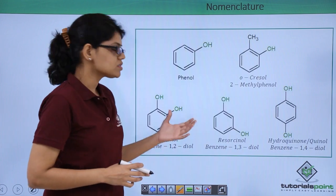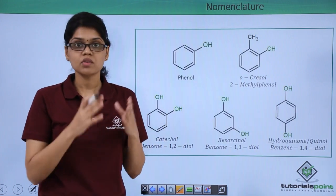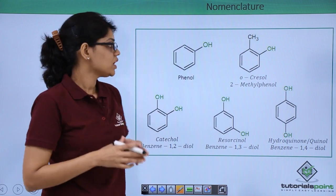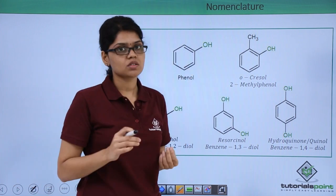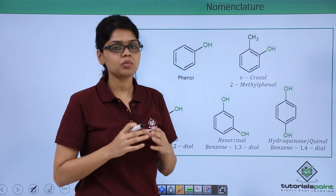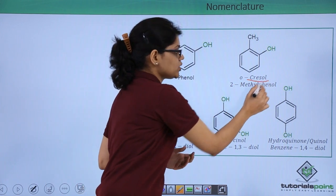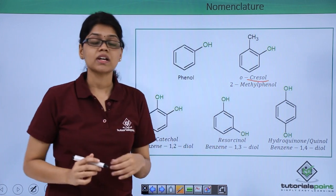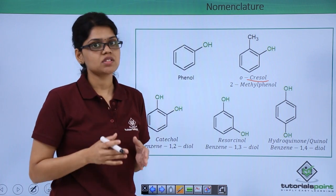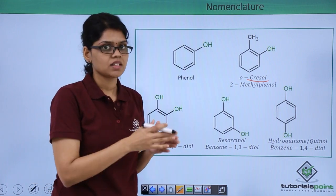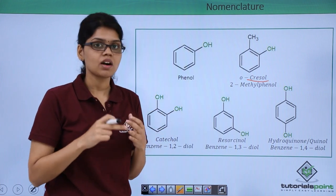We can also look at the common names of a few phenol-substituted compounds. When we have a CH3 group attached to phenol, we call that compound cresol. Depending on the position of the CH3 and OH group, it can be ortho-, meta-, or para-cresol.